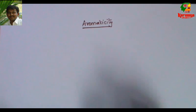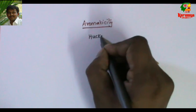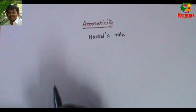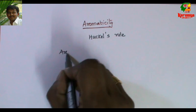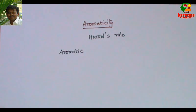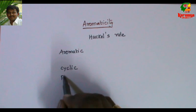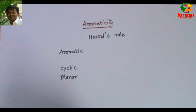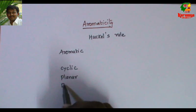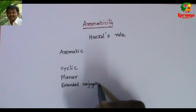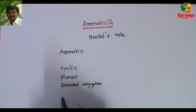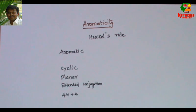It is nothing but the aromatic character of the benzene ring. This aromaticity can be explained based on Hückel's rule. A molecule is aromatic if it is cyclic, planar, has extended conjugation, and the number of electrons involved in extended conjugation is 4n + 2. If all four conditions are satisfied, then that compound is aromatic.